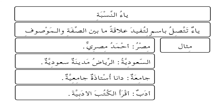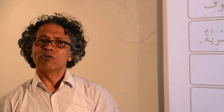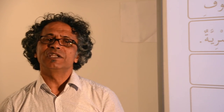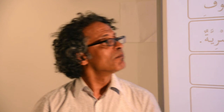We can also make a Nisbah adjective from جامعة. We can say أستاذة جامعية to distinguish a university professor from a teacher in elementary or secondary school. Similarly, from أدب, by adding the ياء of Nisbah, we get أدبية: أقرأ الكتب الأدبية — meaning I like to read literary books. مرة أخرى شكرا لكم ومع السلامة وإلى اللقاء في درسنا القادم.